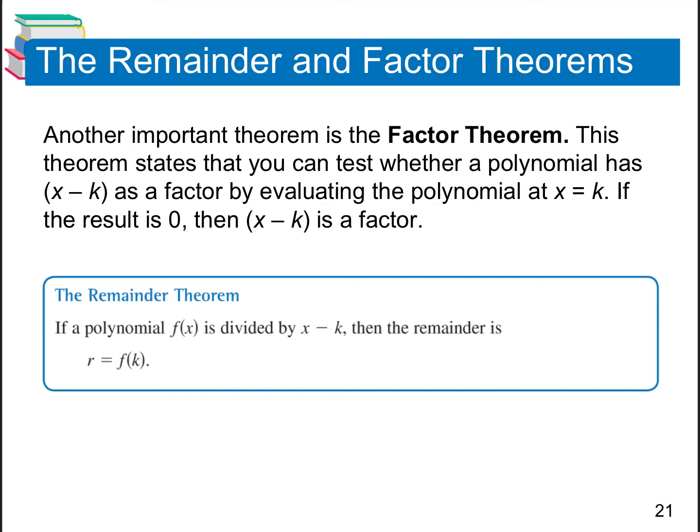This is the Remainder and Factor Theorem, and then we're going to talk about the Rational Zero Test. This is 2.3 Part 2.